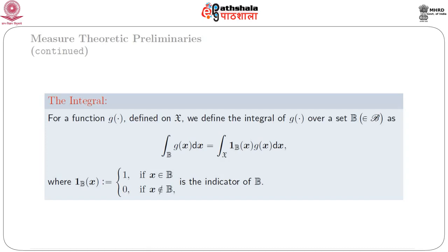For a function g defined on script X, we define the integral of g over a set B belonging to script beta as the integral over B of g(x) dx, equal to the integral over script X of I_B(x) g(x) dx, where I_B(x) is an indicator function which takes value 1 if x belongs to B and 0 if x does not belong to B. Thus, I_B(x) is called the indicator function.